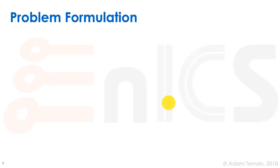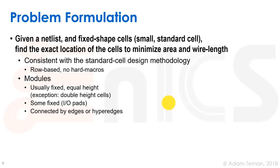Let's look at the problem formulation. Given a netlist and fixed-shape cells, which will be small standard cells, we want to find the exact location of the cells to minimize the area and wire length.